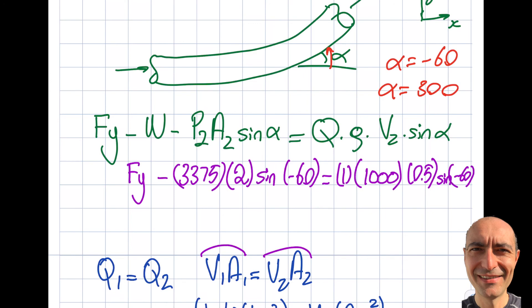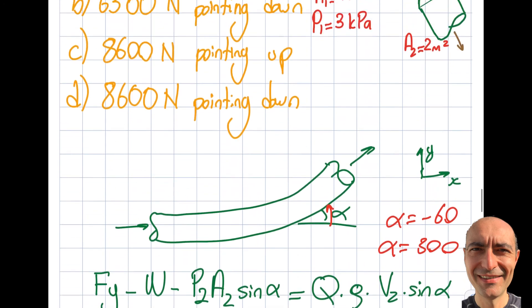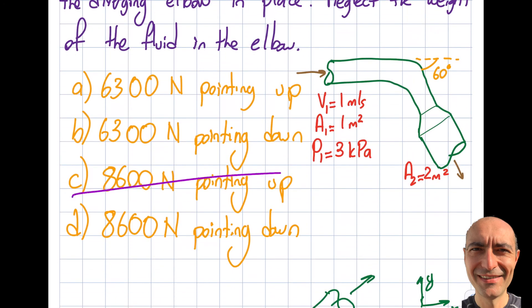Let's take one more step. When I plug this into my calculator, Fy equals -6280 N.